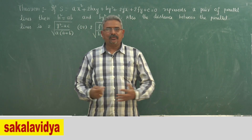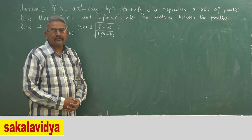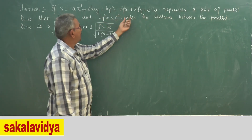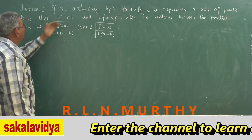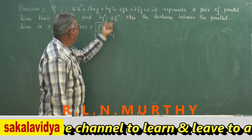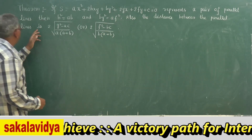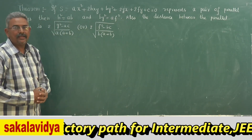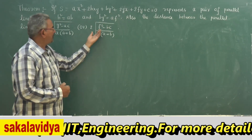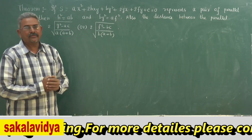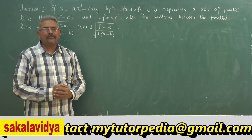Let us have a discussion on one more theorem. If S equals Ax² + 2Hxy + By² + 2Gx + 2Fy + C = 0 represents a pair of parallel lines, then H² = AB and BG² = AF². We also need to find the distance between the parallel lines, which is 2√(G² - AC) / A(A+B), or equivalently 2√(F² - BC) / B(A+B). We need to prove H² = AB and BG² = AF² if the pair of lines represents two parallel lines.